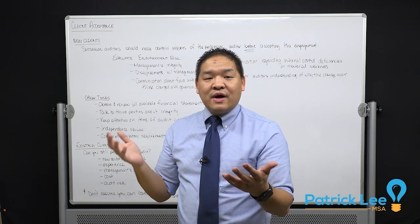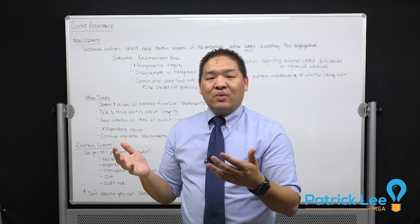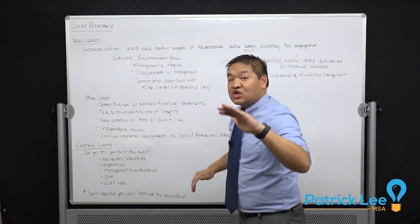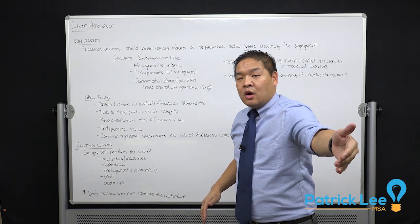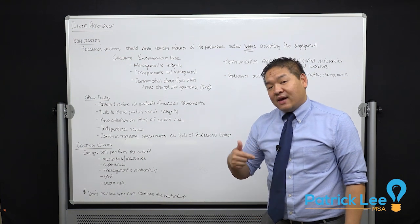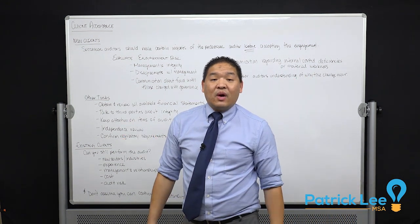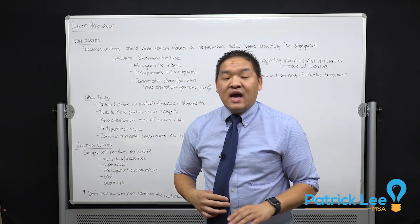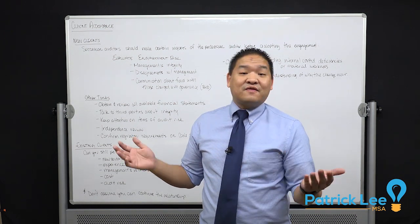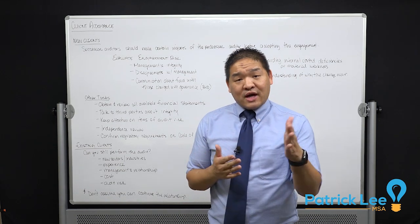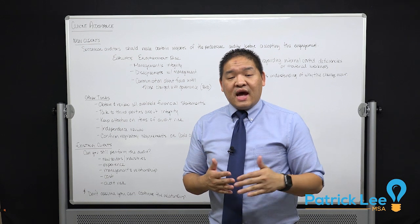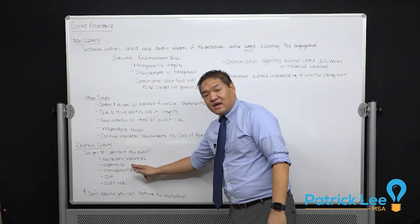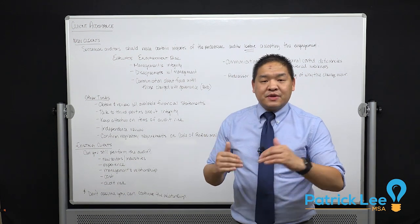That covers new clients — there's a lot of work before they even become our clients, but we do that so we're not putting money on the table that could bite us back later. Now, what about existing clients? Existing clients should go through a similar, though less extensive, process to determine whether we should continue the relationship. Reasons we might let a client go include them entering new sectors or industries we've never audited, or our firm moving away from certain industries because we've lost key clients and no longer have personnel with relevant experience.